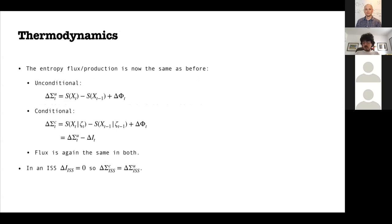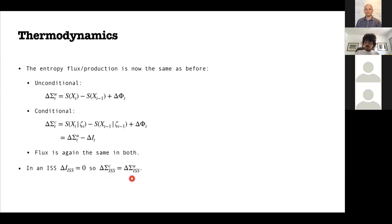Let me briefly recap the second law in this framework. The unconditional entropy production rate is the change in entropy plus flux Φ; the conditional one is the change in conditional entropy plus the same flux Φ. The conditional entropy production equals the unconditional one minus the Holevo information rate. In an informational steady state, the conditional entropy production rate equals the unconditional one.